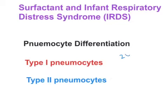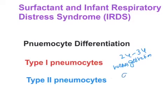between 24 to 34 weeks of gestation. This is the time when there will be differentiation of pneumocytes into type 1 and type 2 pneumocytes, and this process will be helped by glucocorticoids. So sufficient glucocorticoids are needed for the differentiation of pneumocytes into type 1 and type 2 pneumocytes.